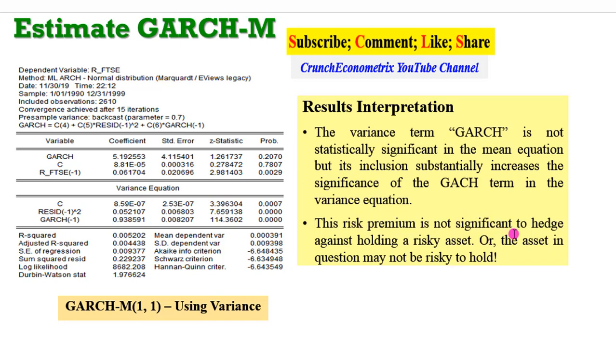We can say that this risk premium is not significant to hedge against holding a risky asset. It's not significant. So we can say that the asset in question may not be risky to hold. So as an investor, if you are using the variance to hedge against holding the risk, you can clearly see that this asset is not risky at all. So you can hold it.